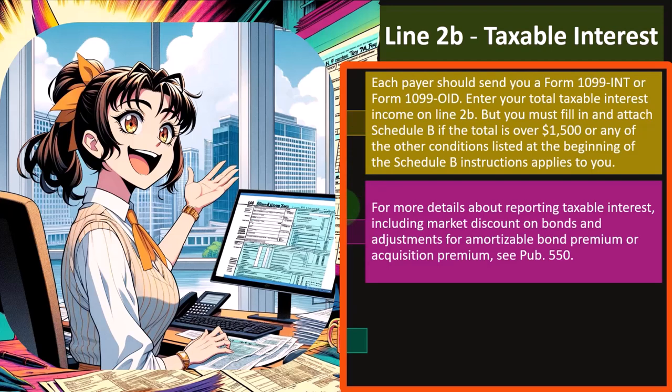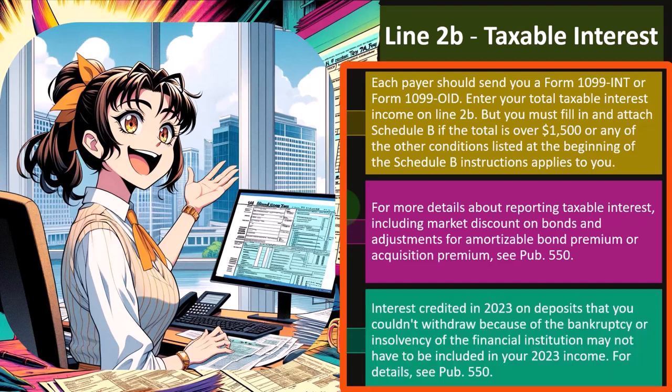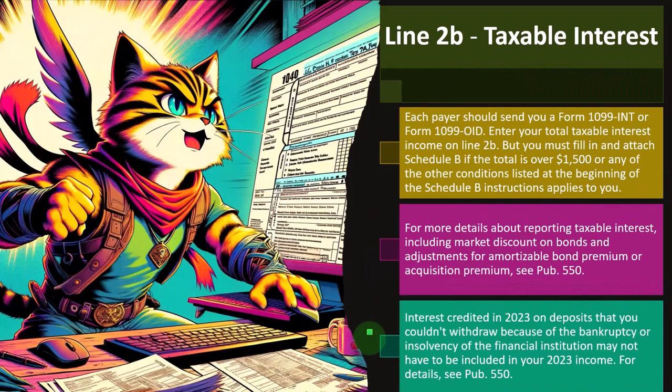For more details about reporting taxable interest, including market discount on bonds and adjustments for amortizable bond premium or acquisition premium, see Publication 550 at irs.gov. Interest credited in 2023 on deposits that you couldn't withdraw because of the bankruptcy or insolvency of the financial institution may not have to be included in your 2023 income. For more details on that unusual situation, see Publication 550.